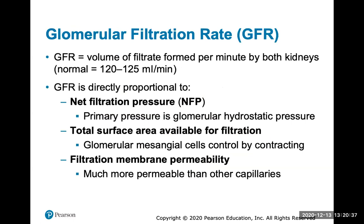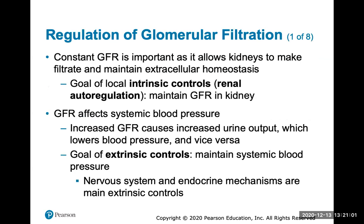The glomerular filtration rate (GFR) is the volume of filtrate formed per minute by both kidneys — normally about 120 to 125 milliliters per minute. It is proportional to the net filtration pressure, the surface area available for filtration, and the filtration membrane permeability. A constant GFR is extremely important as it allows the kidneys to make filtrate and maintain extracellular homeostasis.